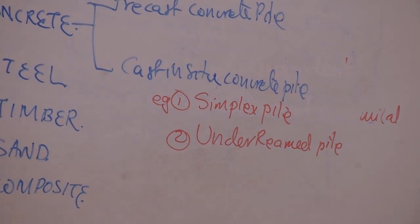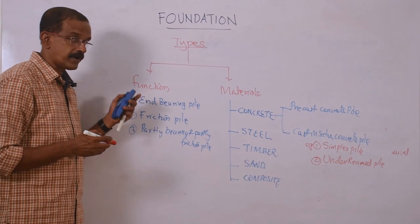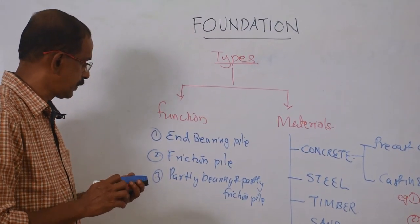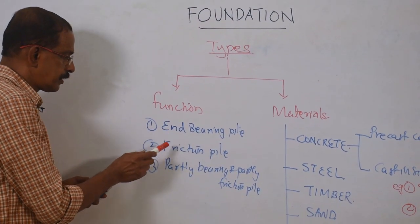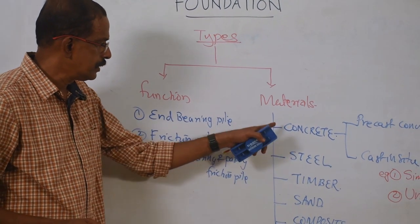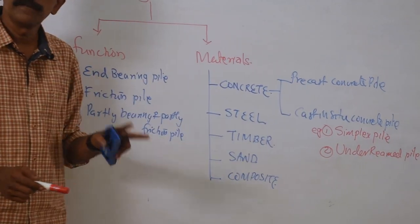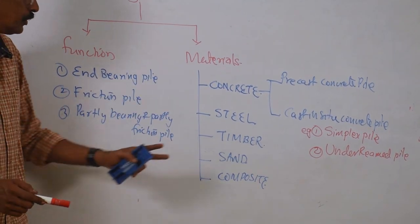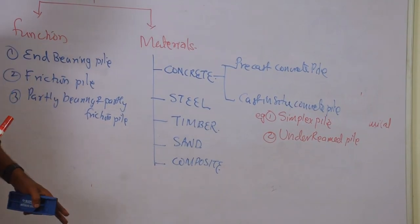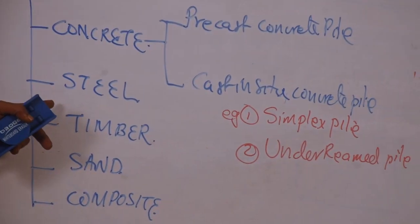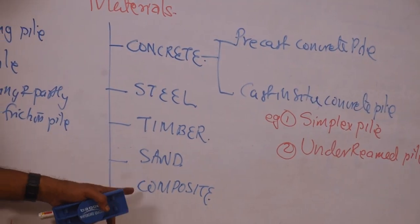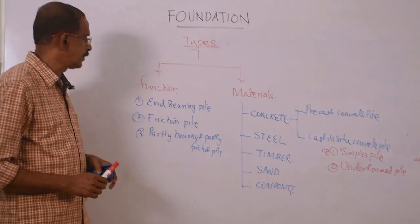So the classification of pile is based on function — end bearing pile, friction pile, partly bearing and partly friction pile — and based on material: concrete (precast and cast in-situ), steel, timber, sand, and composite. Now we will see each one by one, starting with functional classification.